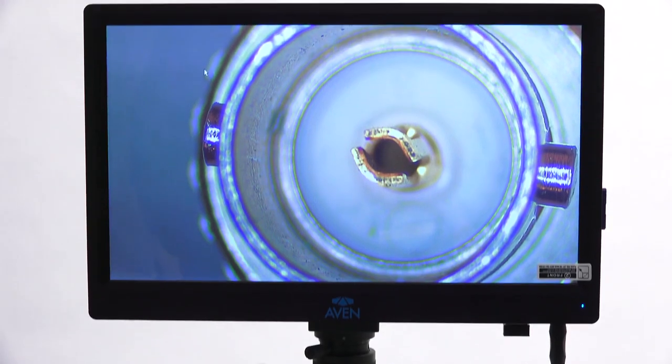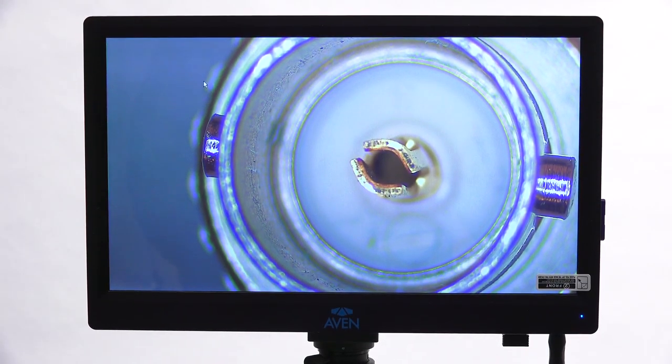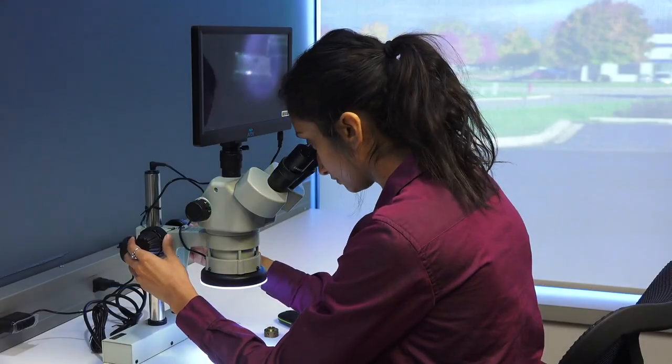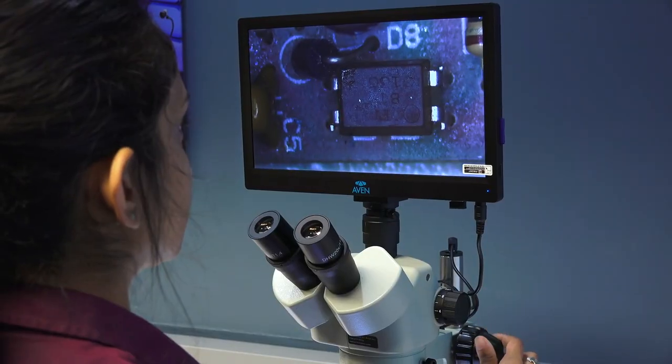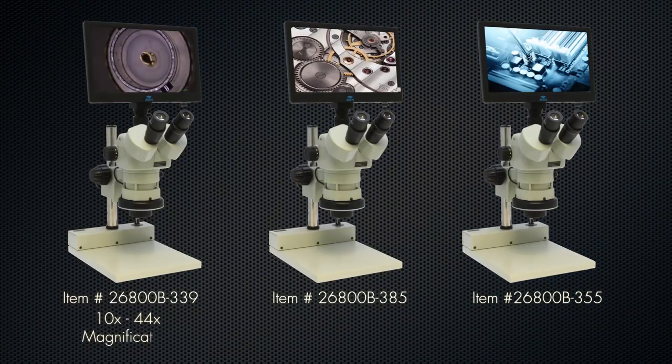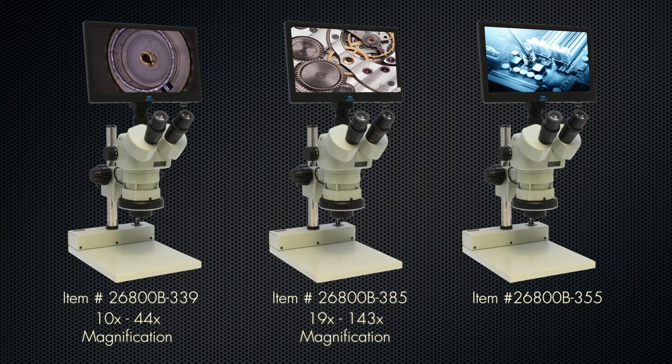Avon's Eidos microscope systems offer users the ability to view objects through the microscope eyepieces or on the monitor with magnification ranges of 10x to 44x, 19x to 143x, or 40x to 258x.